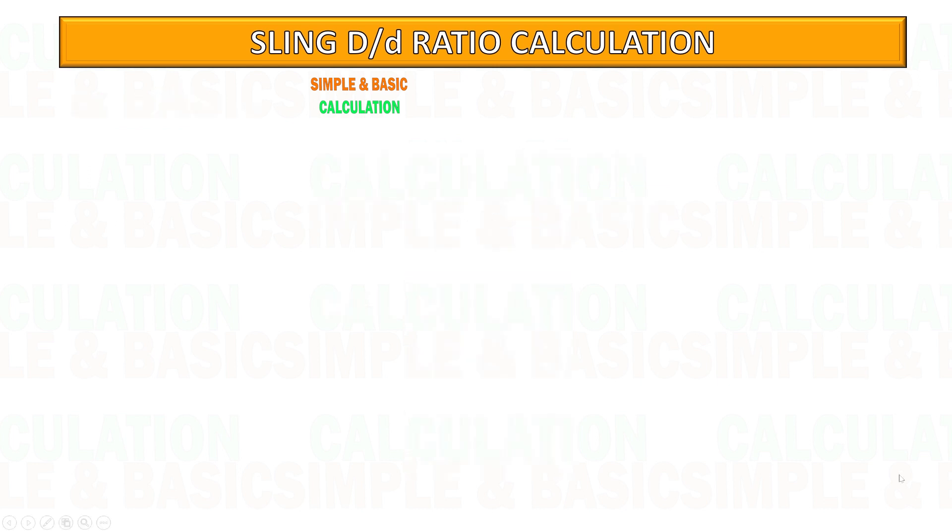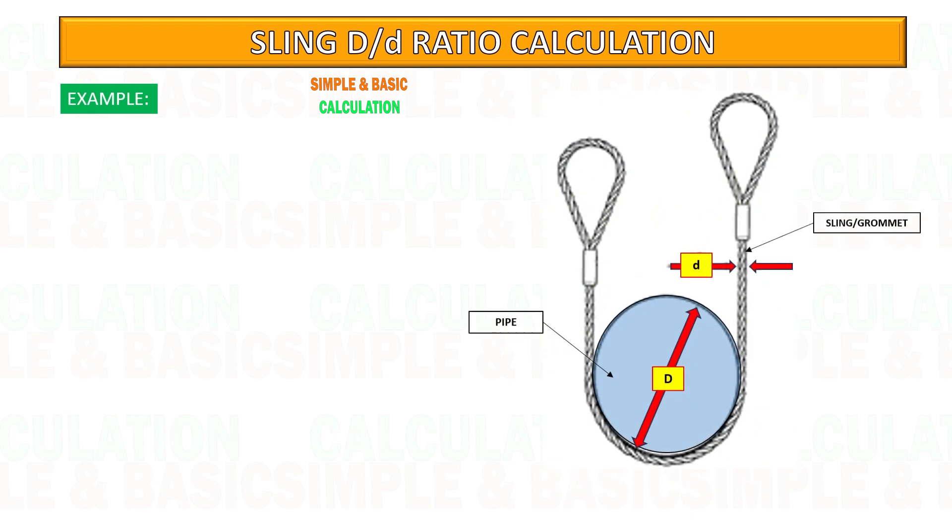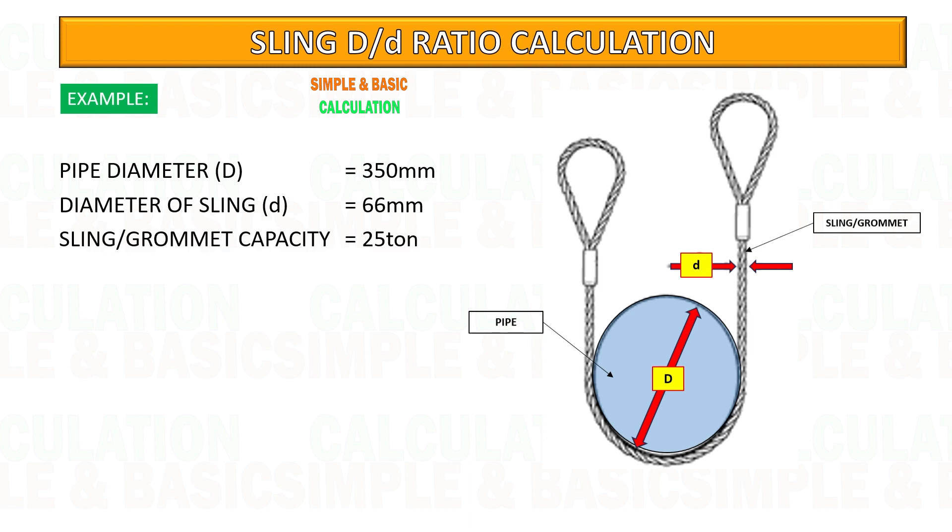Here is another example: a 66-millimeter diameter sling is bent over a 350-millimeter diameter pipe. Let's calculate the reduction factor for the sling.